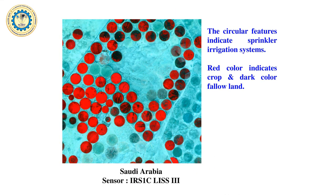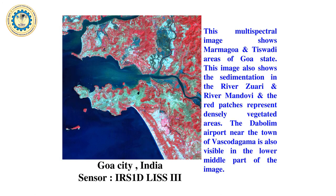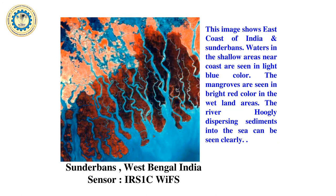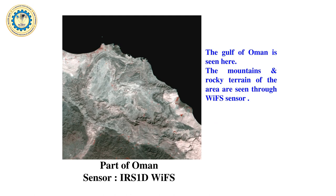In this satellite image, the circular patterns indicate agricultural land done with sprinkler irrigation. The texture and pattern of the arrangement of plants are also visible. In the Goa image showing the Mandovi and Zuari rivers, you can identify the estuary, land, islands, and cyan-colored settlements. In the Sundarbans delta image, all the plantation is mangrove, and you can distinguish clean water from turbid water.